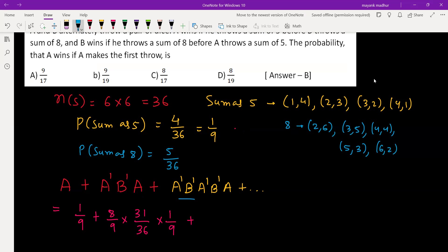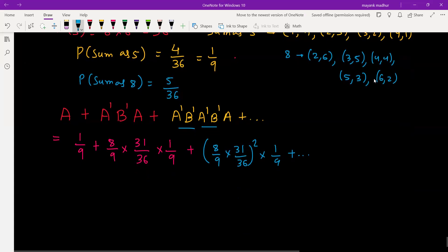Now this A doesn't win, B doesn't win pattern is repeated twice, so (8/9)(31/36) two times, and similarly three times and so on. It is following a GP where first term is 1/9 and common ratio is (8/9)(31/36).